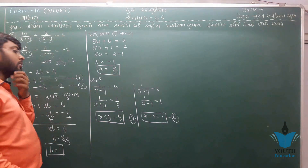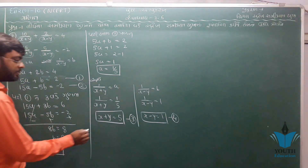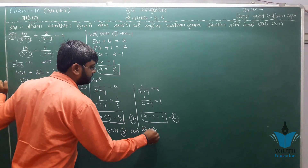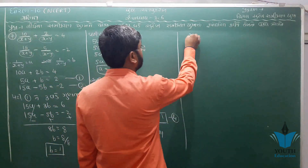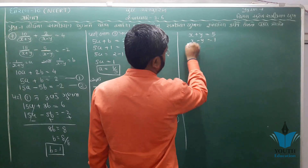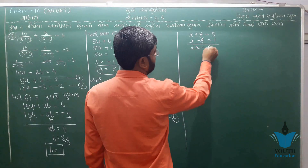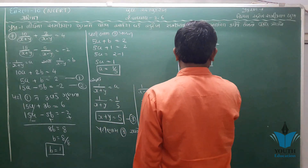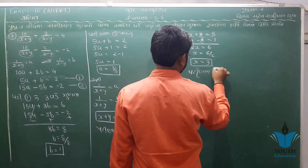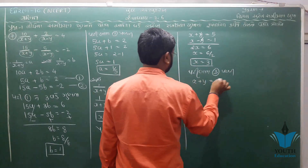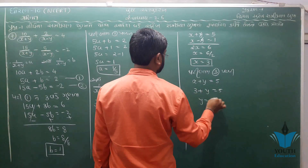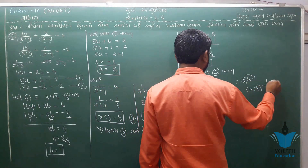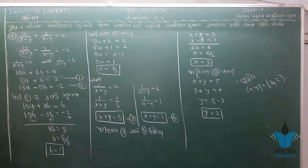પાછા બે સમીકરણ મળ્યા, તો બંને સમીકરણ ઉકેલીએ. પરિણામ 3 અને 4 ઉકેલતા, પરિણામ 3 ની વાત કરીએ તો x + y = 5 અને x - y = 1. y જેટલો? તો x = 6/2, x ની કિંમત 3 મળી. પરિણામ 3 માં કિંમત મૂકો તો x = 3, y = 2.